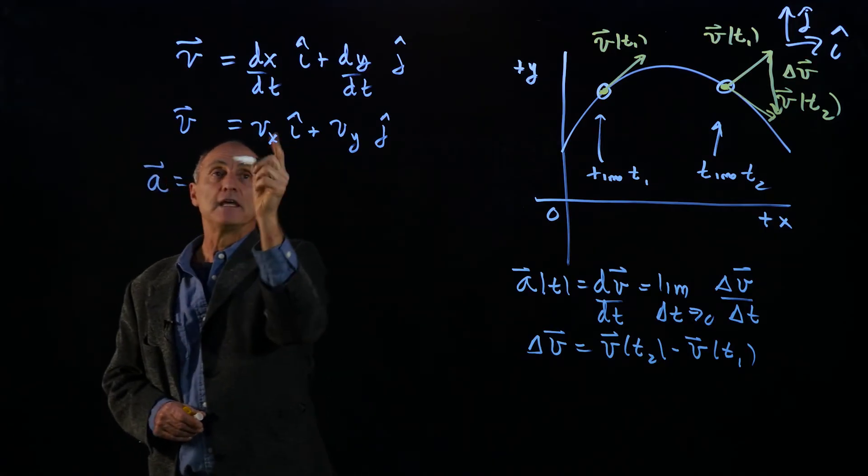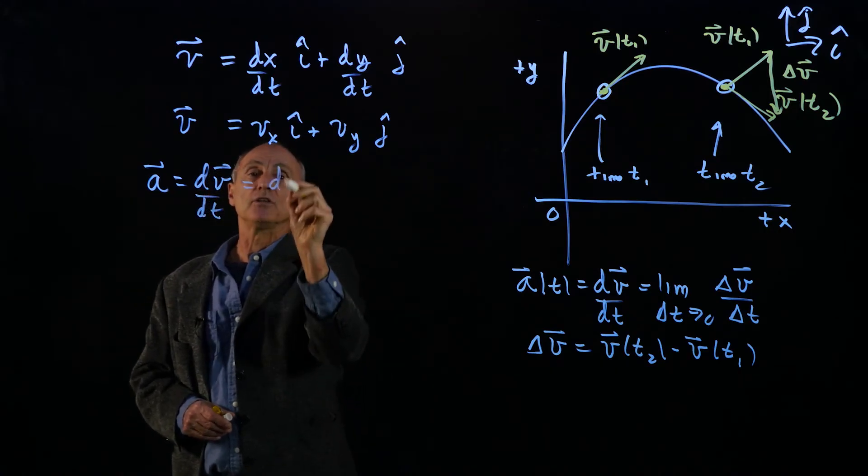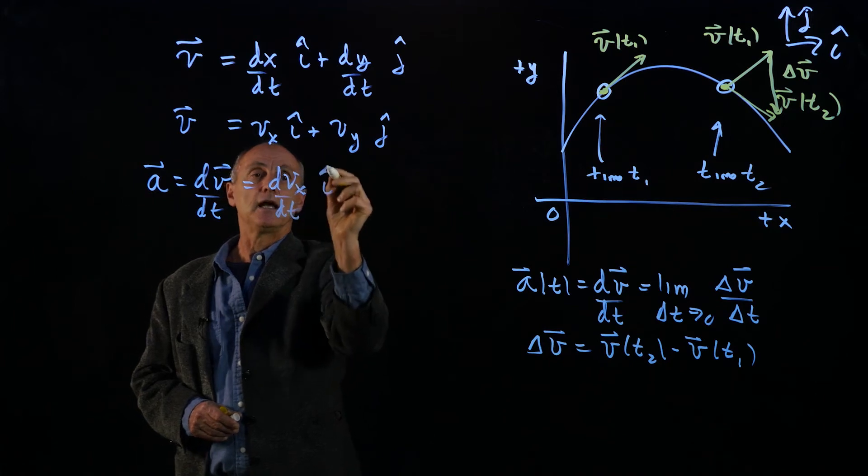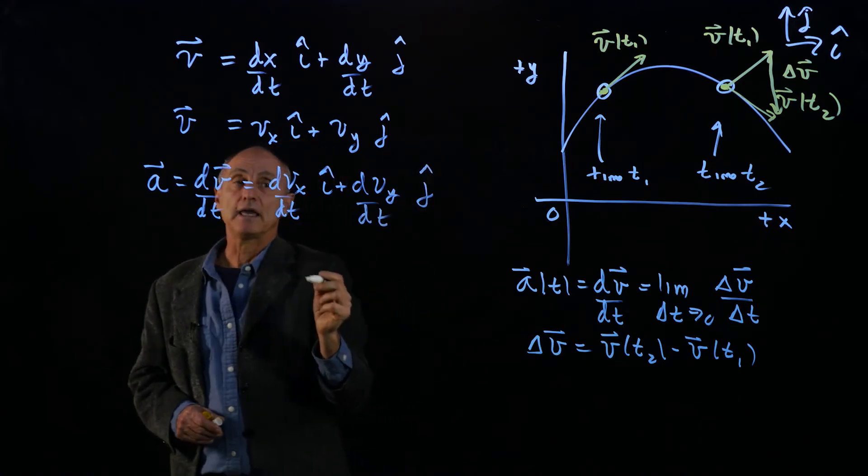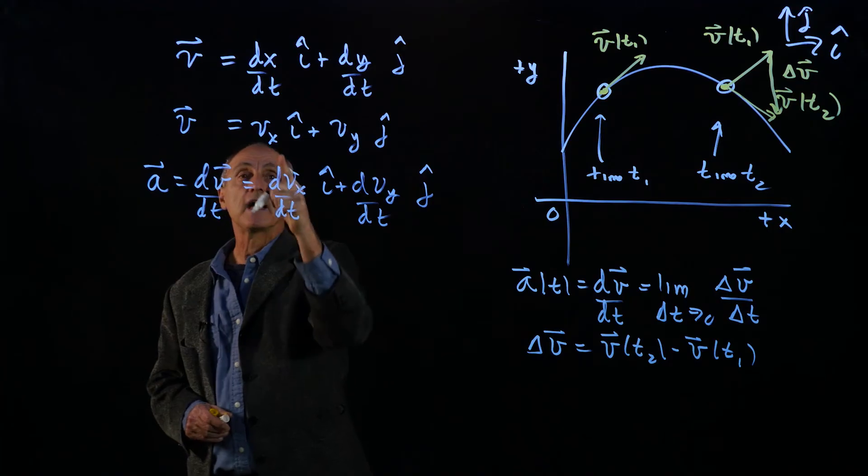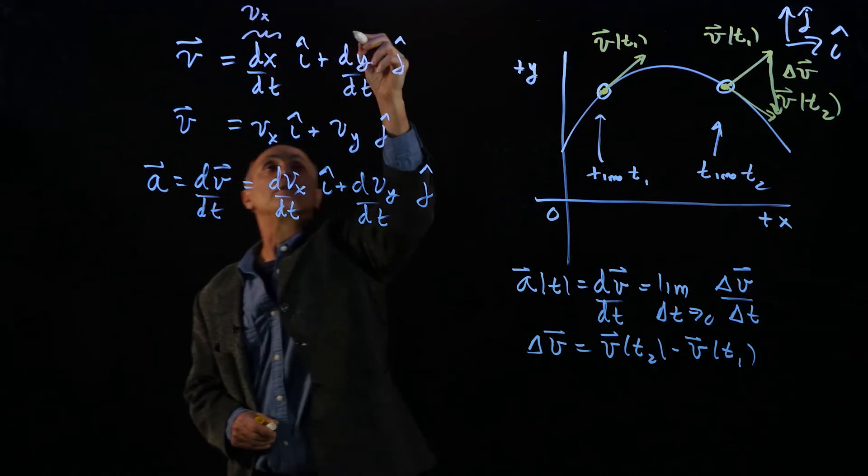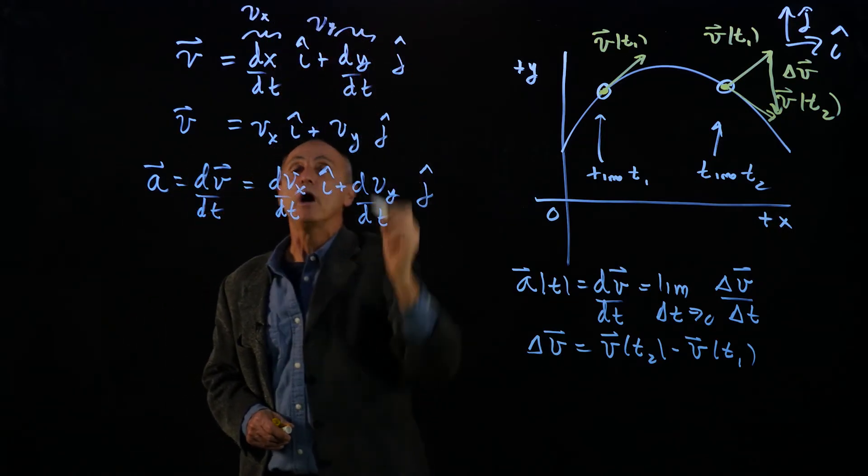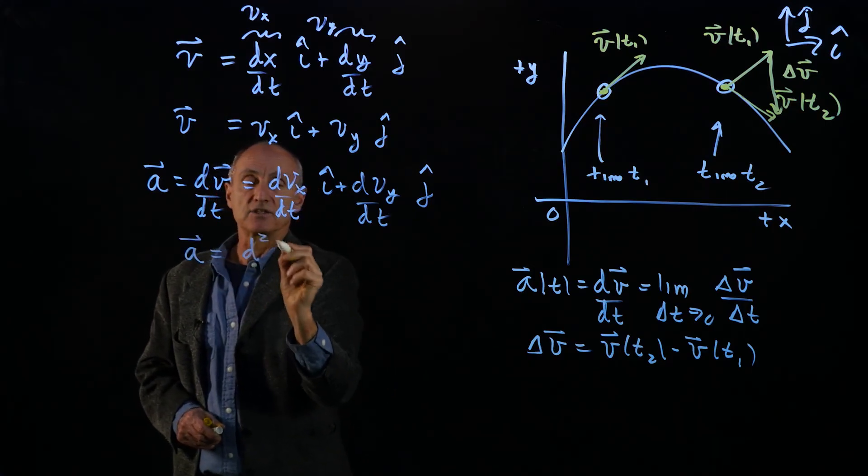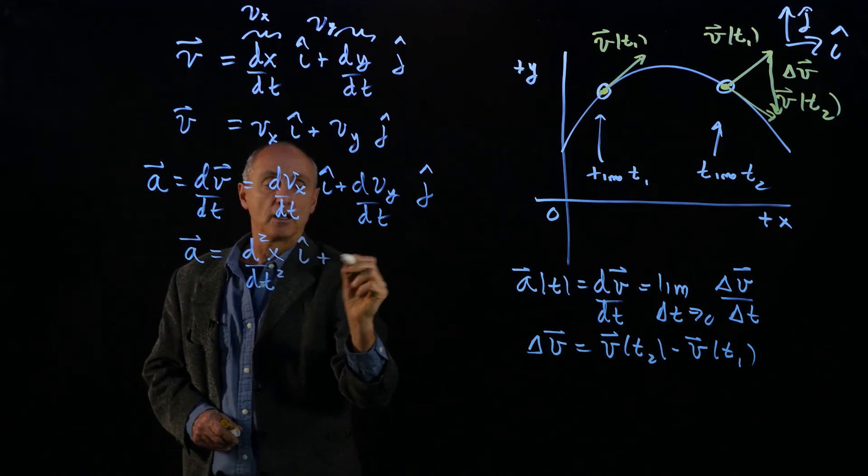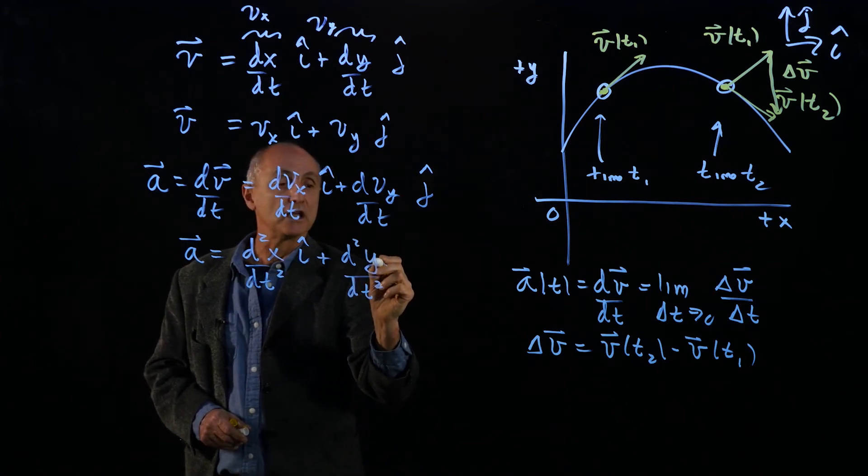Then our acceleration is just the derivative of the velocity. We take each direction separately, so we have dvx dt i-hat plus dvy dt j-hat. Now, again, notice that velocity vx is already the first derivative of the position of the x-component function. So what we really have here is the second derivative of the position function in the i-hat direction, and the second derivative of the component function in the y-hat direction.